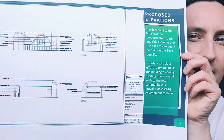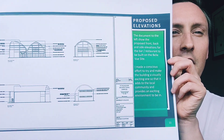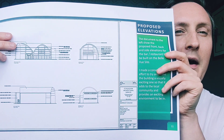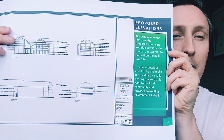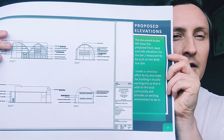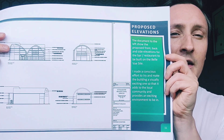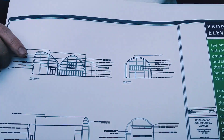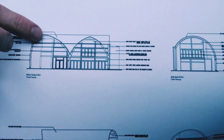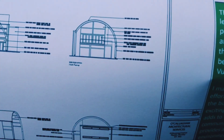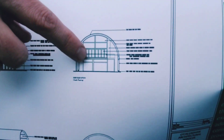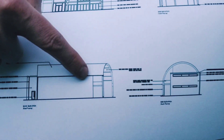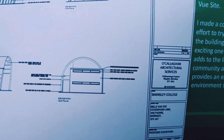The next thing I did was to start design development. The development on the right here shows the proposed front, back and side elevations for the bar restaurant to be built on Bellevue's site. I made a conscious effort to try and make the building as visually exciting so that it adds to the local community and provides an exciting environment to be within. This is the front elevation showing the glulam frames, this is the side elevation with a balcony, rear elevation with rendered walls, and side elevation again.